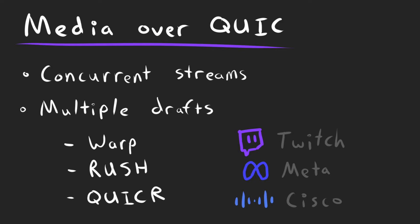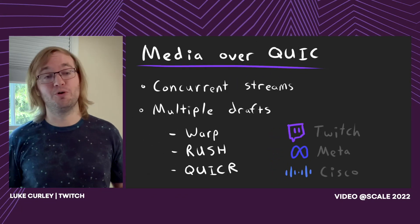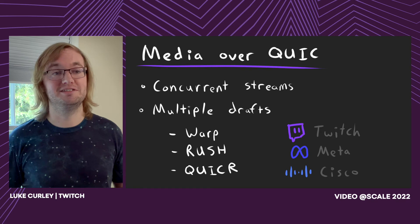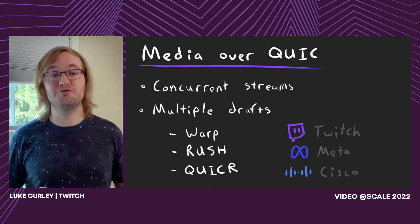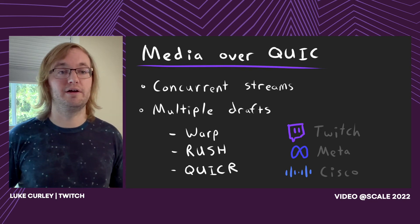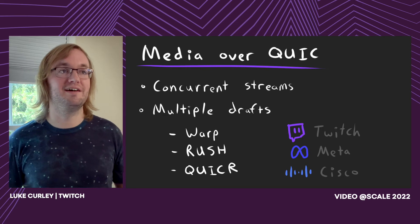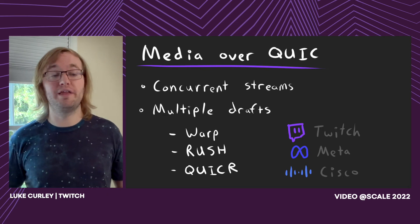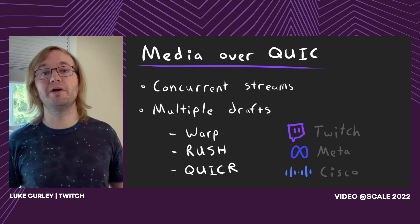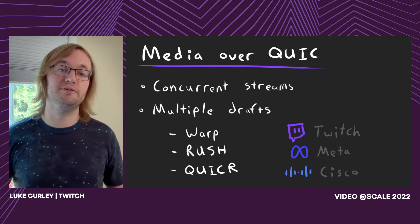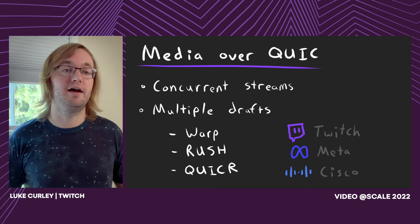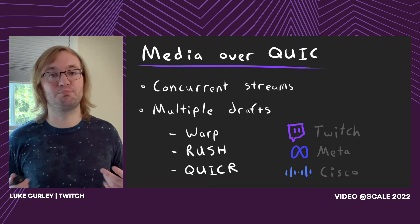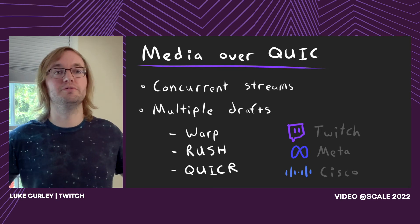There are a few different ideas and drafts. The core principle is we need to deliver media in parallel with multiple streams or datagrams. I've been working on Warp. Meta has independently created Rush, which is very similar to Warp and really cool to see. Cisco has been working on QUIC-R, mostly focused on the real-time and CDN support aspect. Warp is being used for distribution at Twitch, and Rush is being used for ingest at Meta - really cool to see the same protocol effectively used for two different use cases.